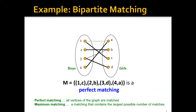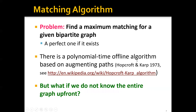Another related concept is maximum matching, which means a matching that contains the largest possible number of matches. For any bipartite matching problem, there is always a maximum matching, but it's possible that there is no perfect matching. A matching algorithm tries to find the maximum matching for a given bipartite graph, and will find the perfect matching if it exists. There is a polynomial-time offline algorithm called the Hopcroft-Karp algorithm, based on augmenting paths, that is commonly used for this.